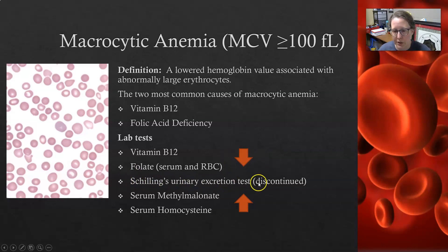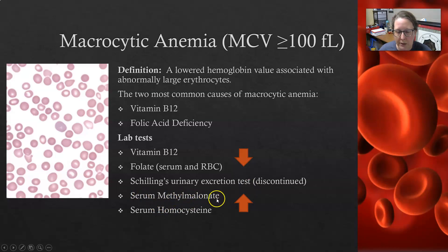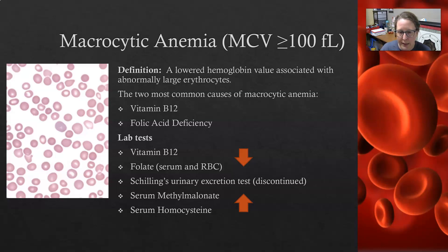There was a test called Schilling's urinary excretion test, which used radioactively labeled B12 and pancreatic enzymes to check for absorption problems, but it has been discontinued. You can also do serum methylmalonate and serum homocysteine. Methylmalonate combines with B12 to make coenzyme A, used in the Krebs cycle for energy production — if there's not enough B12, methylmalonate will be increased. Homocysteine is a breakdown product of B12 and folic acid, and it is also increased in deficiency, so high homocysteine levels are indicative of B12 and folic acid deficiency.